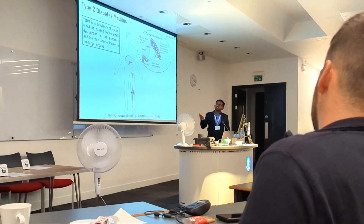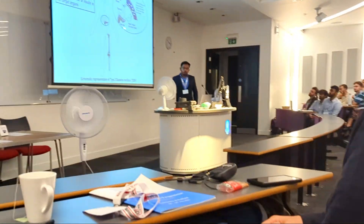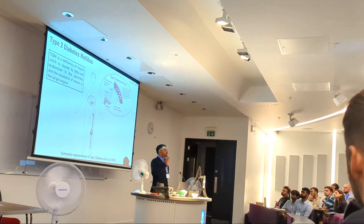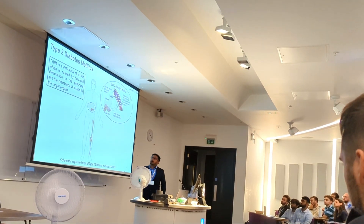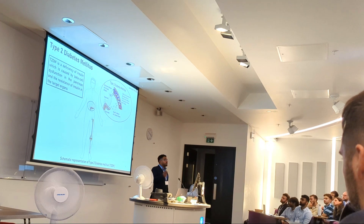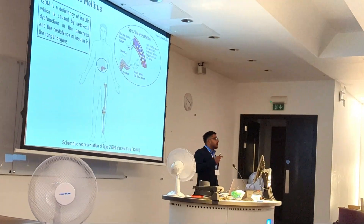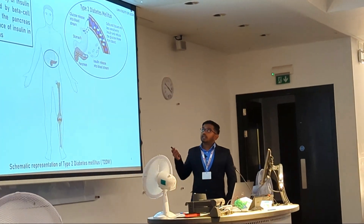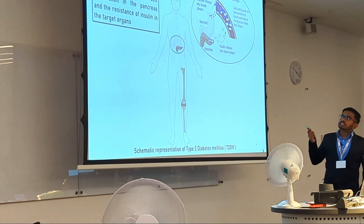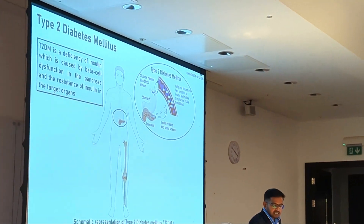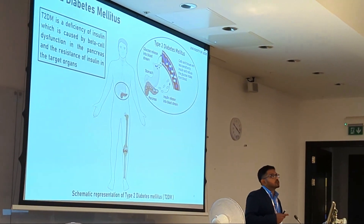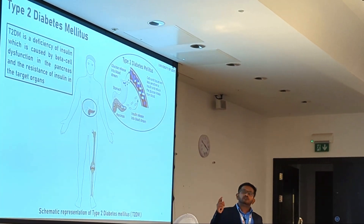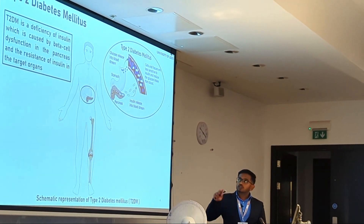When insulin is secreted by the pancreas, glucose will be in the bloodstream but will not be used by the cells or tissues — this is what becomes insulin resistance. Due to the high glucose concentration in the blood, the chondrocyte cells are affected, which I'll explain in relation to osteoarthritis.